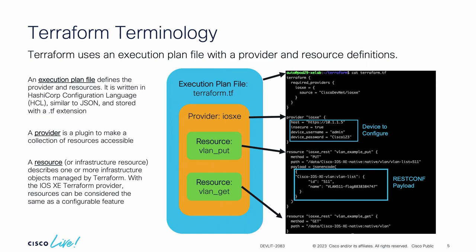Within the IOS XE provider, anything that you can do with REST Conf, you can also do with Terraform. Here in these two green boxes, we have two different resources. You can think of a resource as essentially a feature or something that you want to do with an IOS XE device. First, we're going to create a new VLAN — VLAN 5.11 — we'll be putting this operation onto our device. Afterwards, we have a get VLAN, which will return all of the VLANs currently on our device. So these are the two operations: first a put to create something new, and then a get to verify it's working as expected.